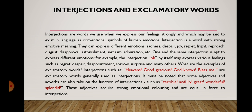Interjections and exclamatory words. Interjections are words we use when we express our feelings strongly, and which may be said to exist in language as conventional symbols of human emotions. Interjections are words with strong emotive meaning. They can express different emotions: sadness, despair, joy, regret, fright, reproach, disgust, disapproval, astonishment, sarcasm, admiration, etc.